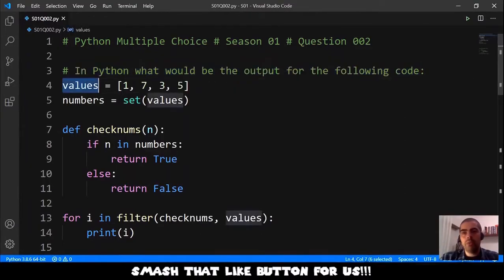We start with a values that is a list of numbers 1, 7, 3 and 5.